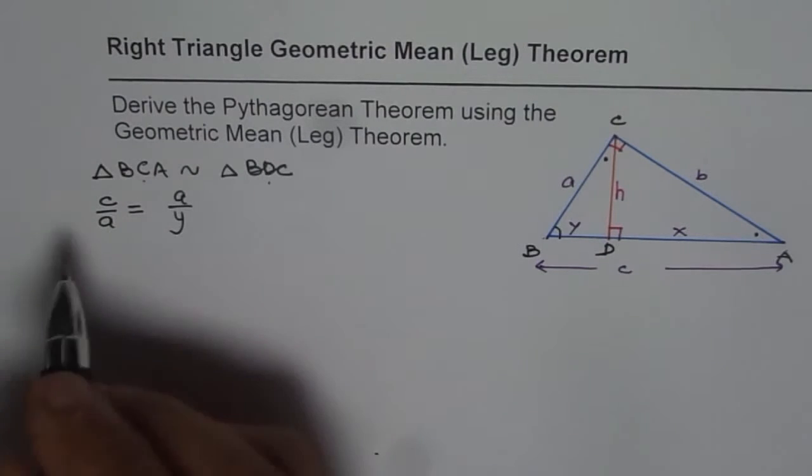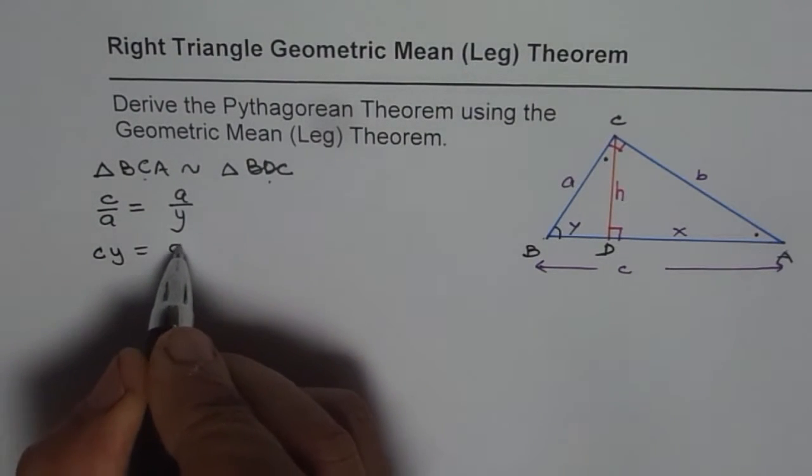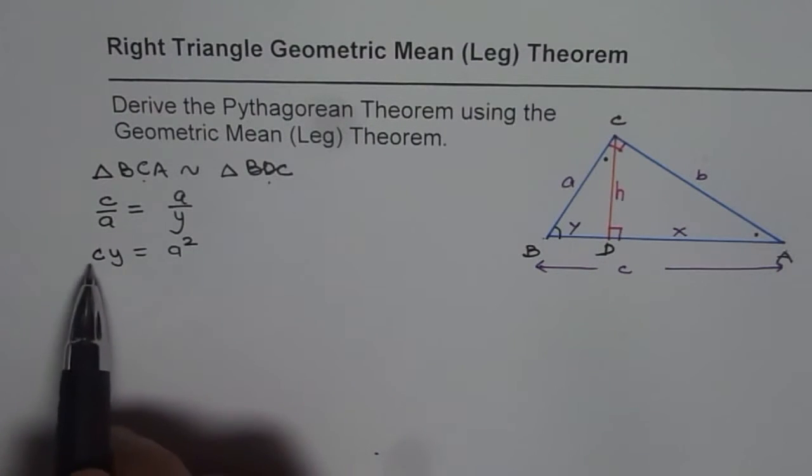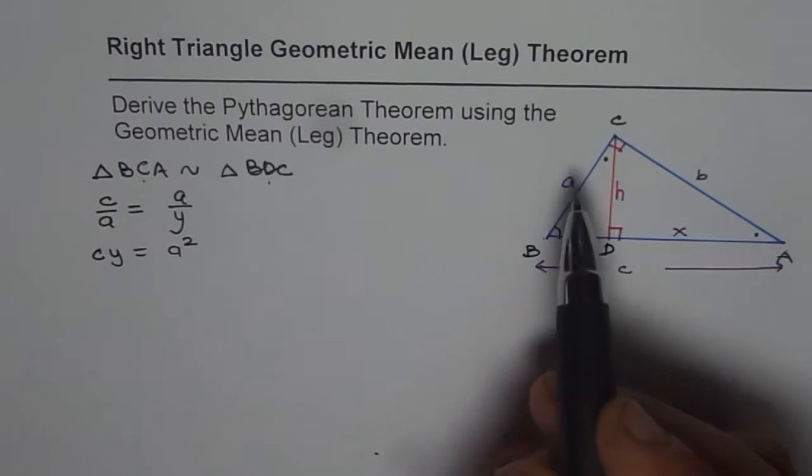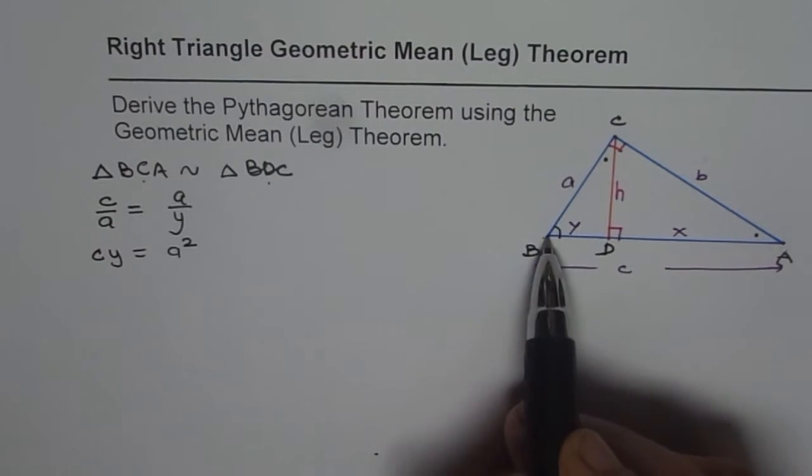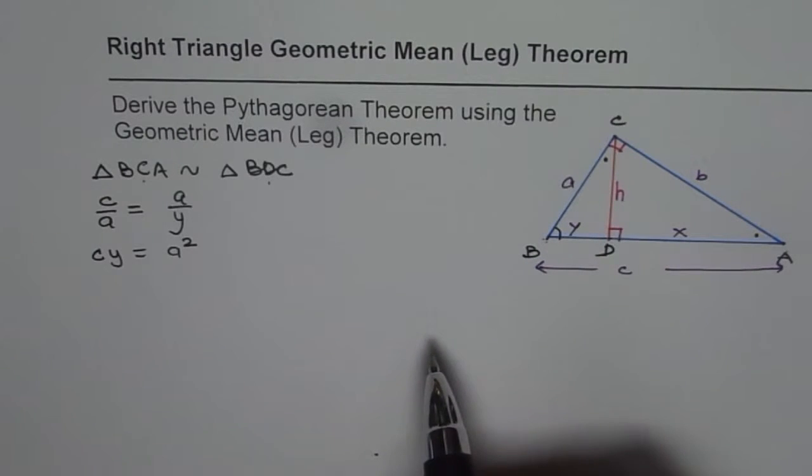If you cross multiply, you get CY equals A square. And that is the geometric mean theorem. A is equals to square root of CY, correct? So the leg of the right triangle is geometric mean of hypotenuse and the adjacent side segment of the hypotenuse.